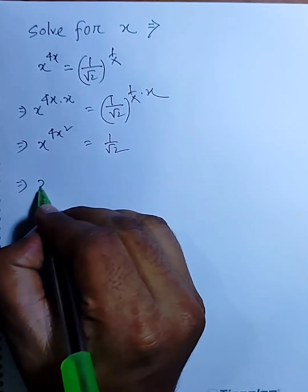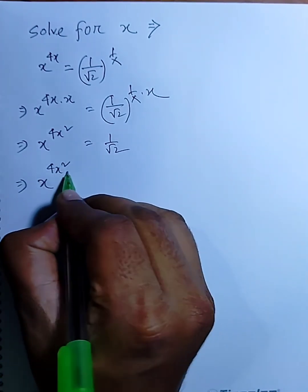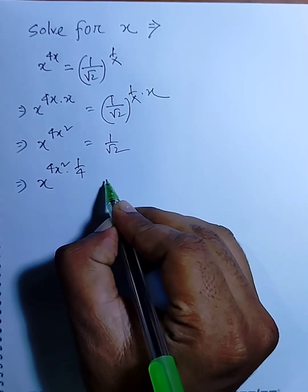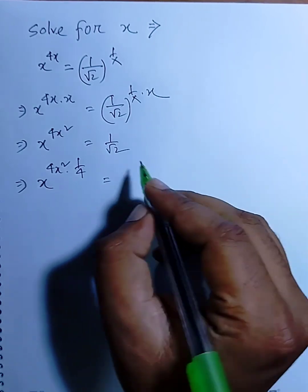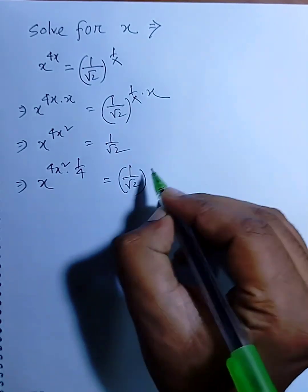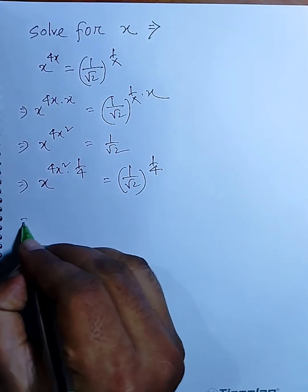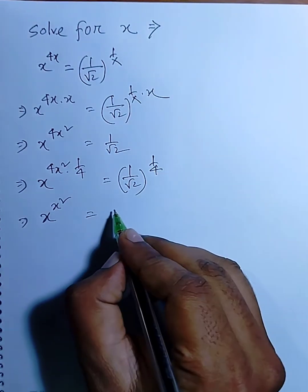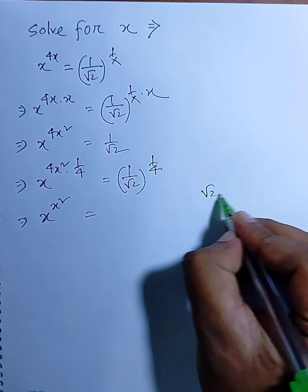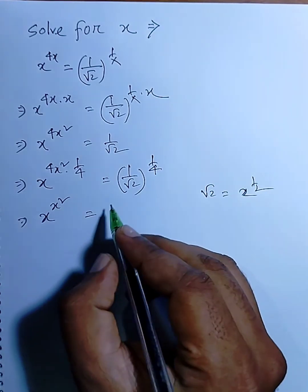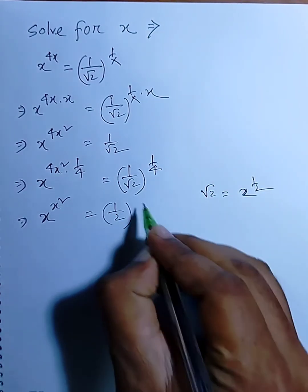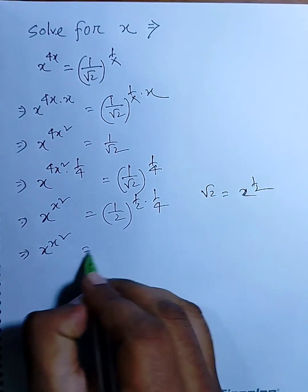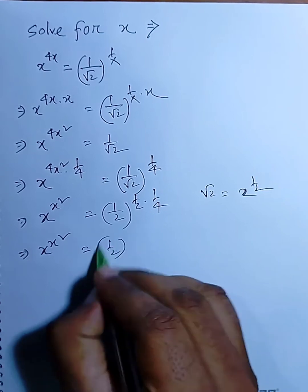So now, x to the power 4x squared dot 1 by 4 equals 1 by root 2, 1 by 4. Now, x to the power x squared equals — we know that root 2 equals 2 to the power half. So now I can say, 1 by 2, half into 1 by 4, which gives 1 by 8.